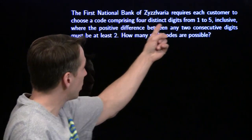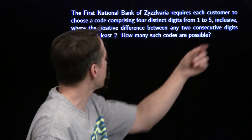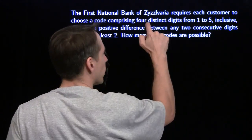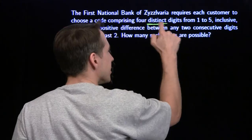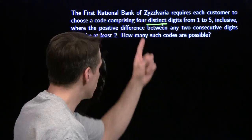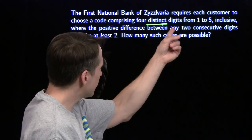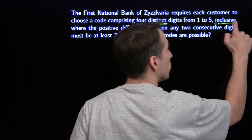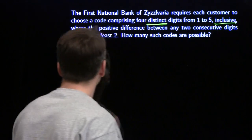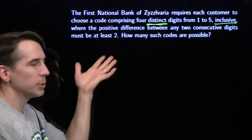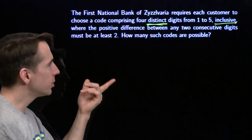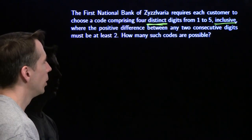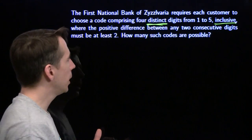The first National Bank of Zizalvaria requires each customer to choose a code comprising four distinct — that means different, we're going to underline it because that's a sneaky word — distinct digits from one to five, inclusive (another sneaky word: it means we can include the one and the five), where the positive difference between any two consecutive digits must be at least two. How many such codes can we make?